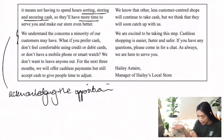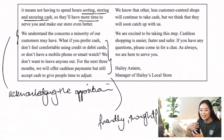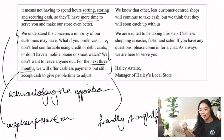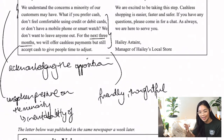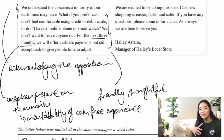She says: 'What if you prefer cash, don't feel comfortable using credit cards, or don't have a mobile phone or smartwatch? We don't want to leave anyone out. For the next three months, we'll offer cashless payments but still accept cash to give people time to adjust.' She's again building up this position as friendly, helpful, thoughtful, and caring about her community. More pessimistically, by saying people have three months, there's an unspoken pressure. She's emphasizing the supposed inevitability of a cash-free shopping experience. Even by saying 'minority,' she applies pressure — you're part of this smaller group. There's a very clear expectation that these customers need to adapt and catch up.